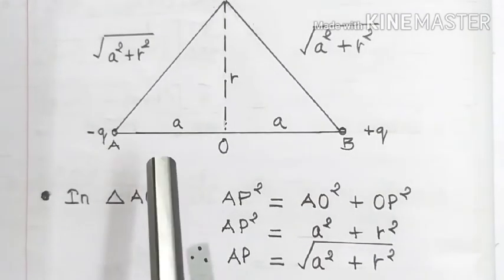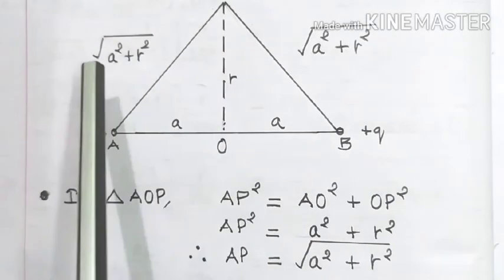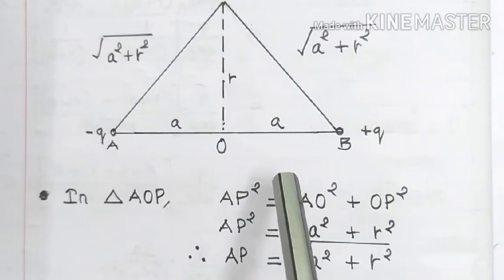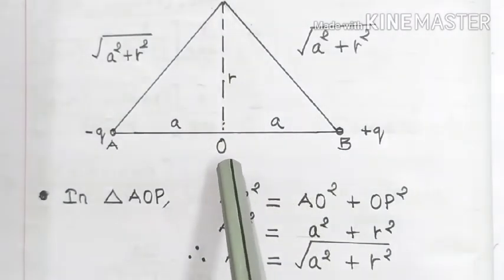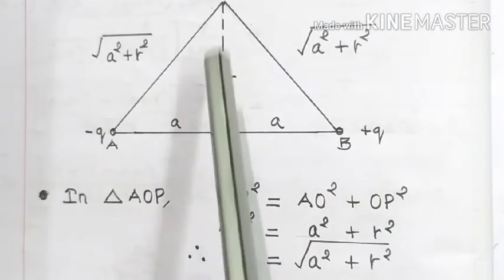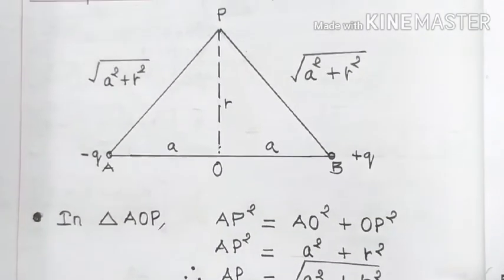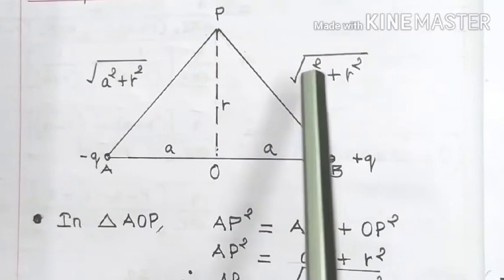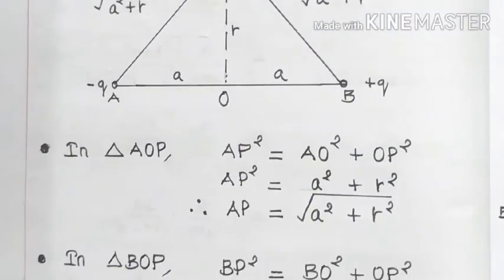Similarly, AP is equal to square root of a² plus r². Similarly, in this right-angled triangle BOP, if we calculate the distance BP, then it will become square root of a² plus r². Now let us see how it comes.